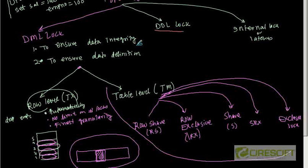Basically, DDL locks are used to protect schema definition while the object is undergoing some sort of DDL operation. Let's try to give an example and that will make it clear.